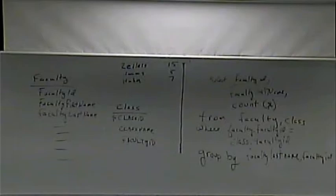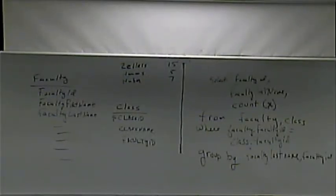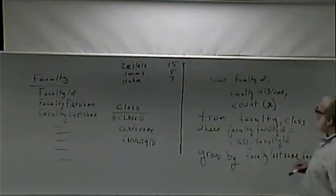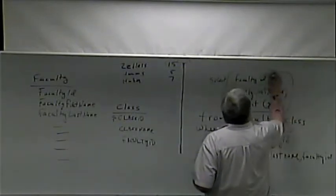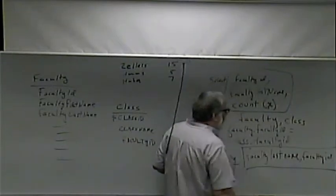Here's the rule, and I hope you understand it — but if you don't, just memorize it. It's sort of like gravity: it works whether you understand it or not. Here's the rule: everything in the SELECT either has to be included in the GROUP BY, or is an aggregate function. So does this pass the test? I have three things in the SELECT: faculty_ID — not an aggregate function, but it's in the GROUP BY, so that's okay. Faculty_last_name — it's in the GROUP BY, so that's fine. COUNT is an aggregate function.